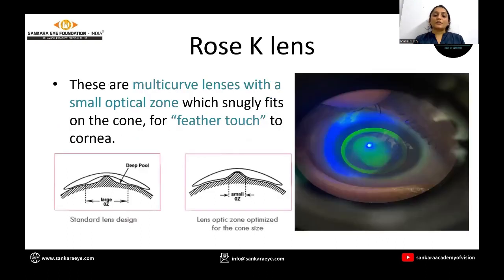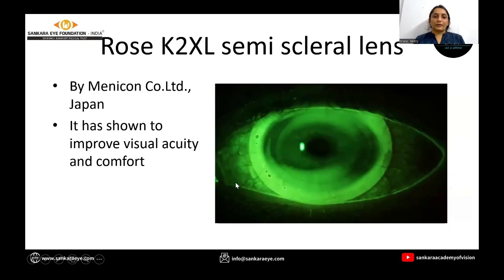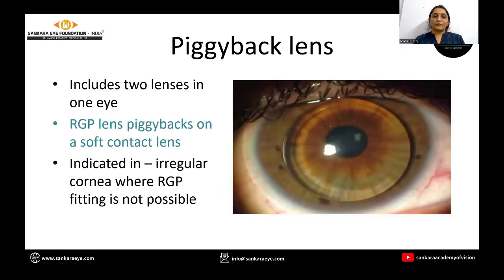Rose-K lenses are multi-curved lenses with a small optical zone which snugly fit on the cone and give a feather touch to the cornea. Rose-K 2 XL are mini scleral lenses. They have also shown some visual acuity improvement and comfort.